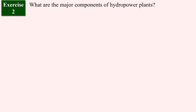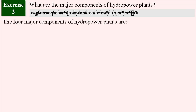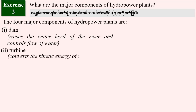Question number 2: What are the major components of hydropower plants? The four major components of hydropower plants are: number one, the dam — it raises the water level of the river and controls the flow of water. Number two, the turbine.